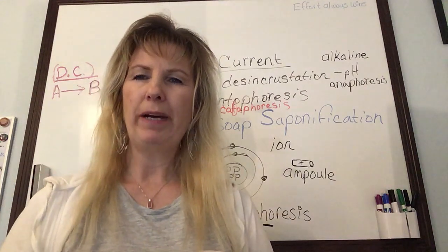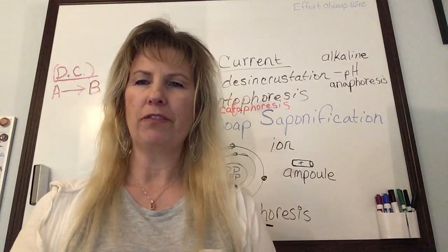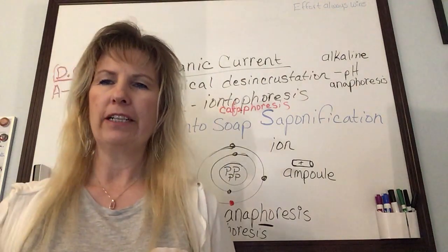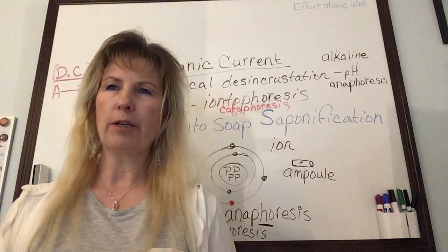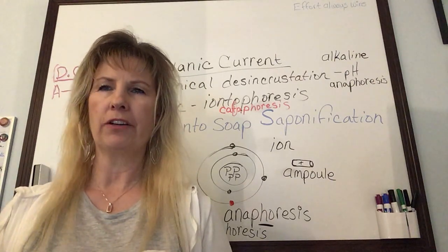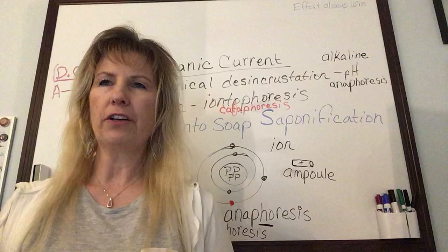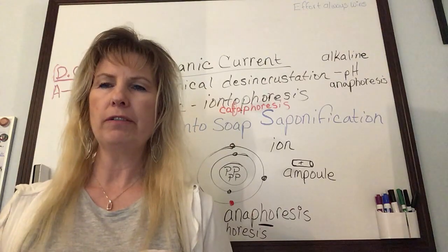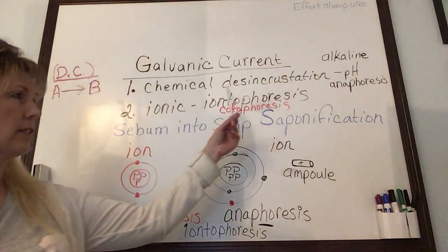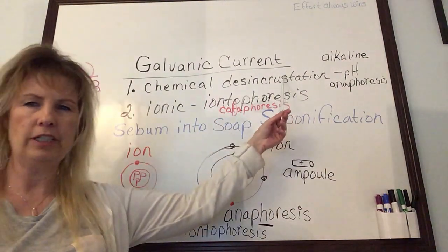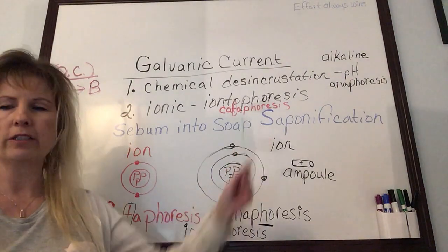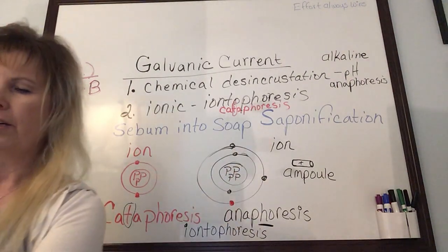Hi everyone, back in chapter 10, facial devices and technology, section 10-9. We're going to talk about how to safely and effectively use the galvanic current. Galvanic current is used to create two significant reactions in aesthetics: the first is chemical desincrustation and the second is iontophoresis.